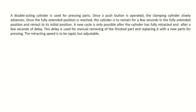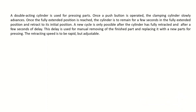I picked this example from 'Pneumatics Basic Level,' the textbook written by Festo. The example says we have a double acting cylinder which is used for pressing parts, and once a push button is operated, the clamping cylinder slowly advances. We have a few important pieces of information here: a double acting cylinder, a push button which means we would have a directional control valve configured with a push button and a spring return on the other side.